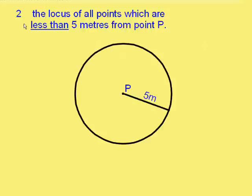So let's look at that example slightly differently. What's the locus of all points which are less than 5m from point P? Well, that's easy. We just fill in the circle and that whole green region is less than 5m from point P. And so that is the locus of all points which are less than 5m from P.